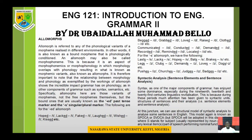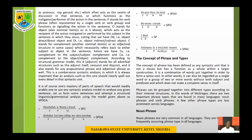The subject (S) has to do with the doer of an action. The predicate or verb (P/V) is the action being performed by the subject. The object (O) is the recipient or receiver of the action being performed. The complement (C) is either a subject complement or object complement — a word referring you back to the subject or object. The adjunct (A) is either an adverb, a prepositional phrase, or an adjectival phrase that provides additional information.